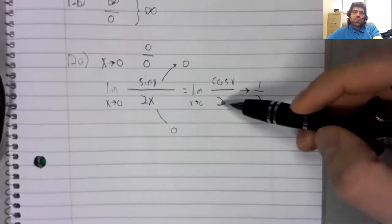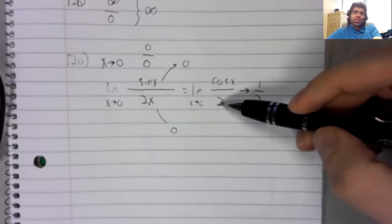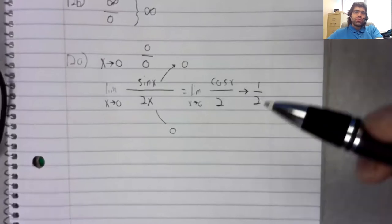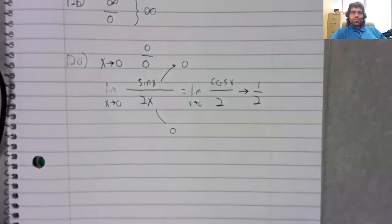And of course, a constant function is continuous. Two goes to two. So there's your limit.